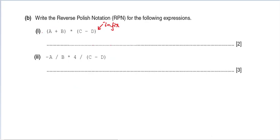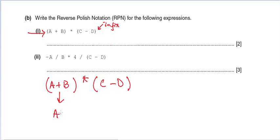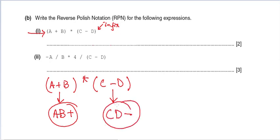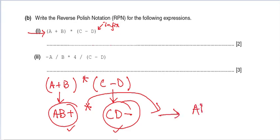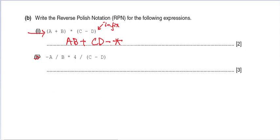Now we solve the expression (A plus B) star (C minus D). First, solve the brackets: A plus B becomes AB plus, and C minus D becomes CD minus. We have an operator between these two results, so it moves to the right. Our final answer is AB plus CD minus star.